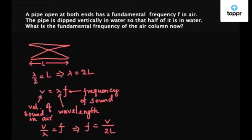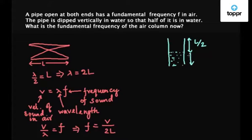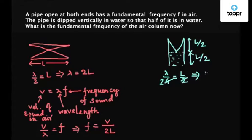Now we take the second case — when the pipe is dipped vertically in water such that half of it is submerged. So effectively only L by 2 length is exposed to air and the other half is submerged in water. The fraction of wavelength inside this organ pipe will be something like this: lambda by 4 equals L by 2. Cancelling 2 from both sides, we get lambda equal to 2L.